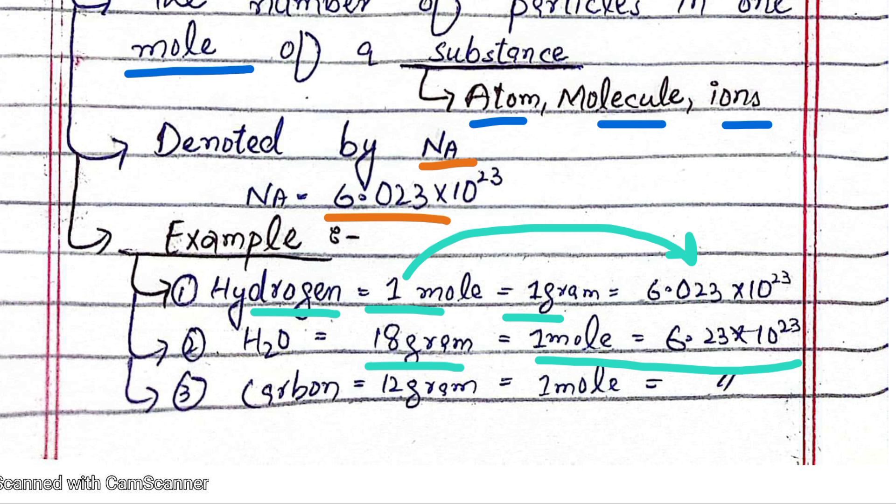Carbon has atomic mass 12, so 12 grams equals 1 mole of carbon, which contains 6.023 × 10^23 particles.